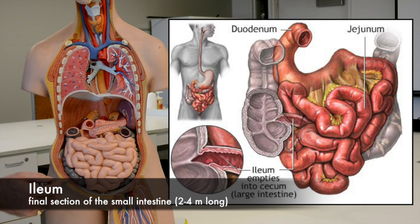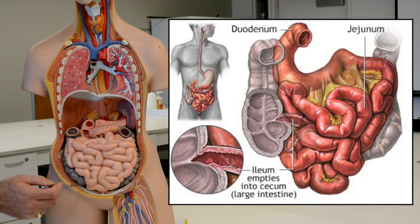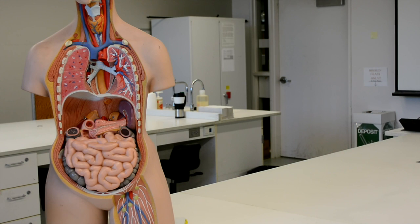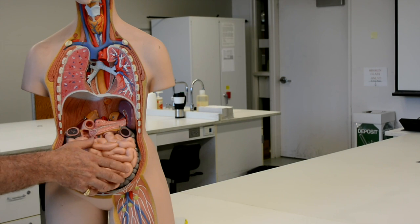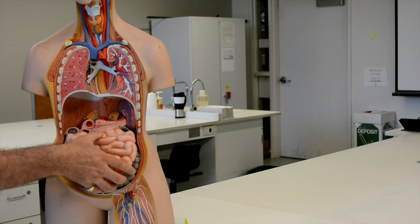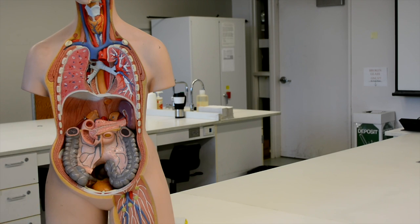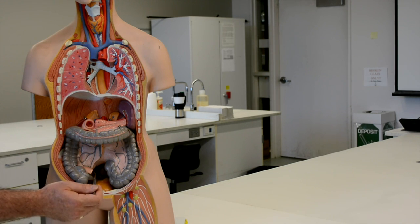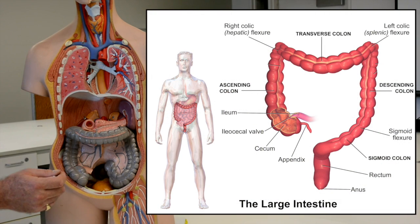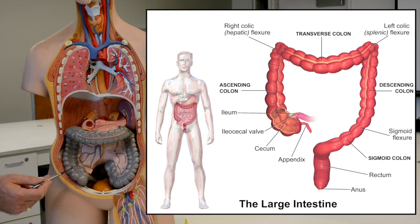The ileum enters the first part of the large intestine through the ileocecal valve. Now if we remove the small intestine, we can get a better view of the large intestine. We can see the ileum entering the first part of the large intestine, which is the cecum.